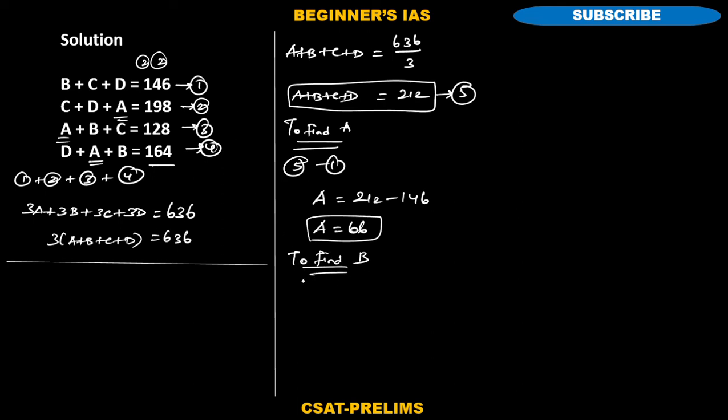How to find B? To find B, just use equation number 5 with 2. Therefore 5 minus 2 is nothing but simply eliminating C, D, A. We can derive the answer as B, so B equal to 212 minus 198. Therefore B is equal to 14.